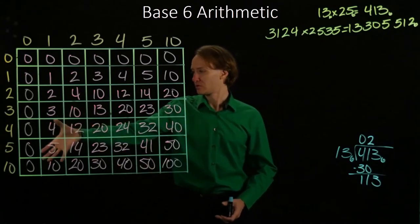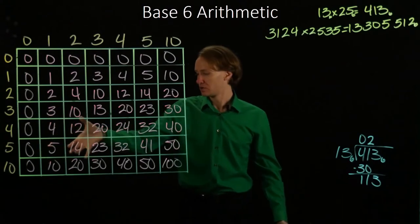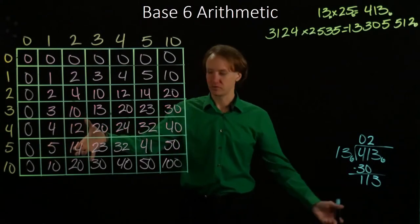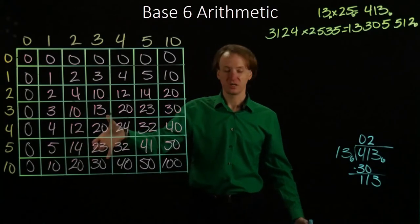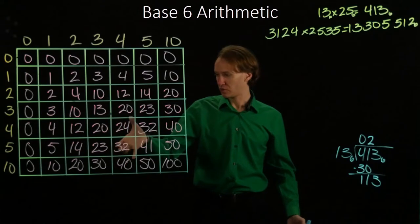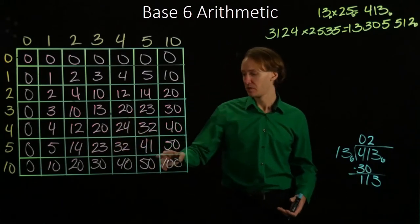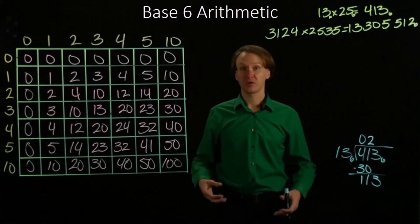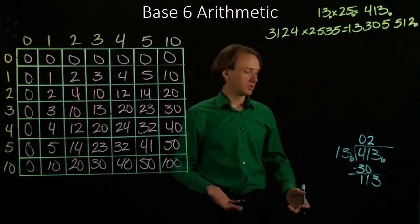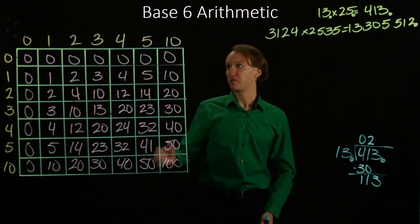So I can see 3 plus 10 is less than 113. 10 plus 20 is less than 113. 30 plus 13 gives me 43, that's less than 113. 40 plus 20 is 100, so that's less than 113. 50 plus 23 will give me 113. So that's exactly what I want. So that's from the 5's column.